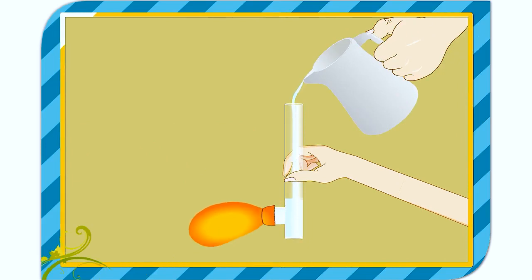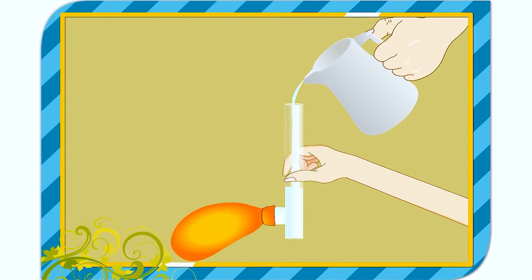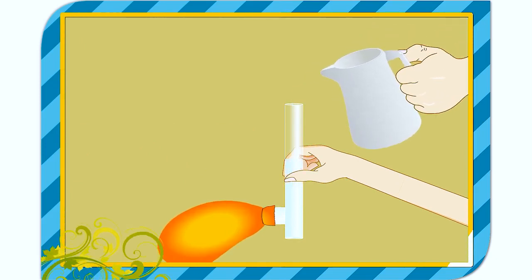Hold the glass tube vertically and fill water into it. You will observe that the balloon bulges outwards. Pour more water into the glass tube. The balloon bulges more. You can conclude that the liquids exert pressure on the walls of the container they are kept in.